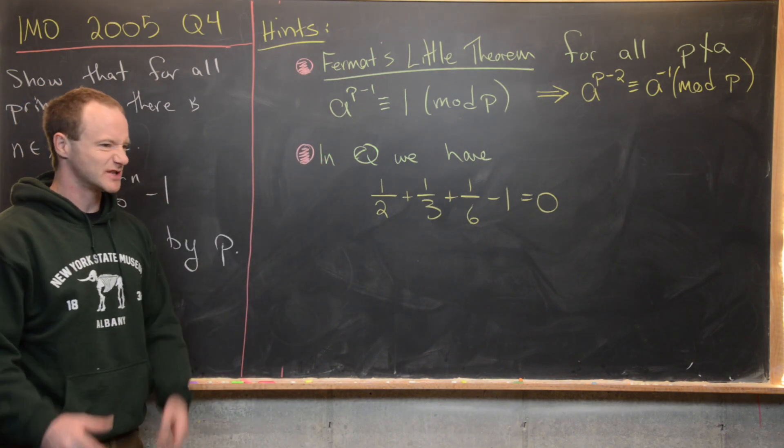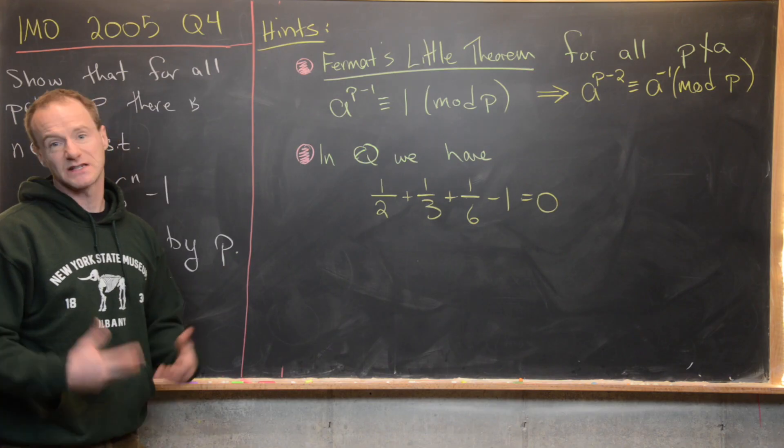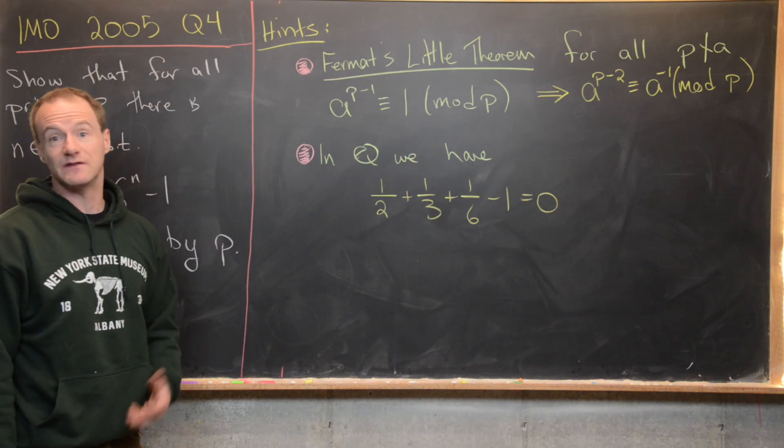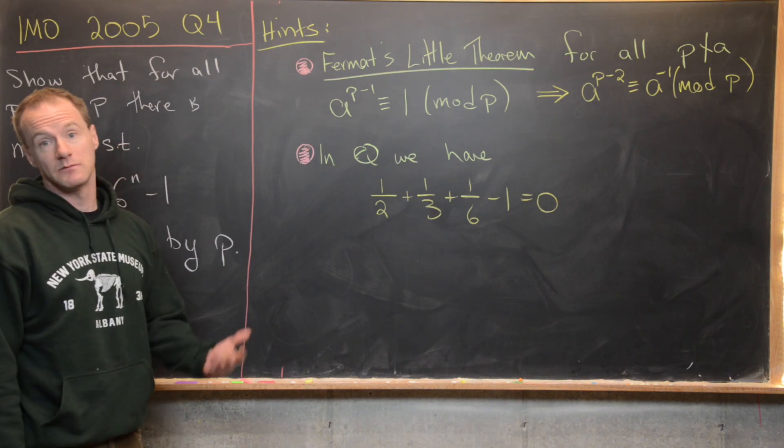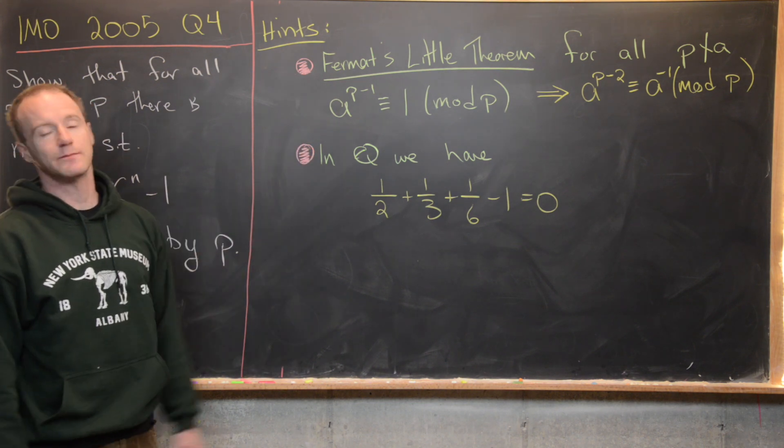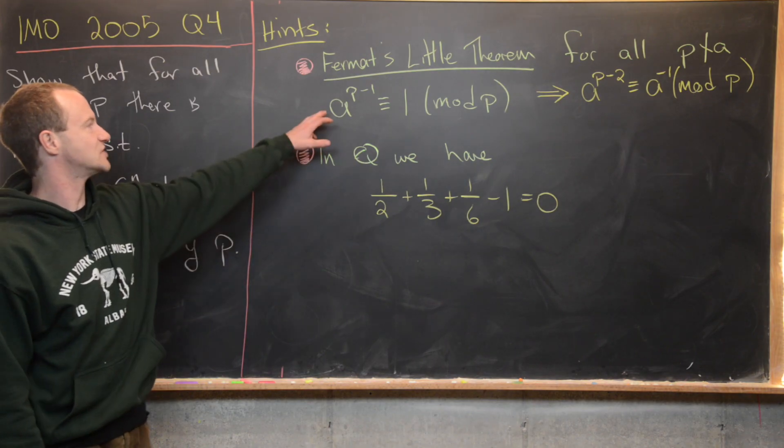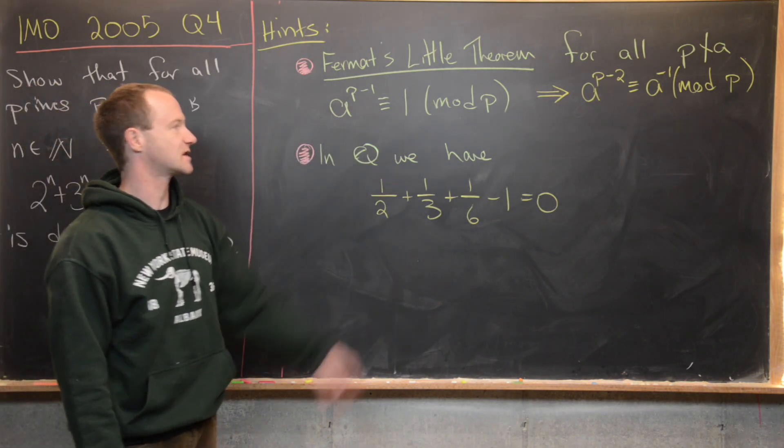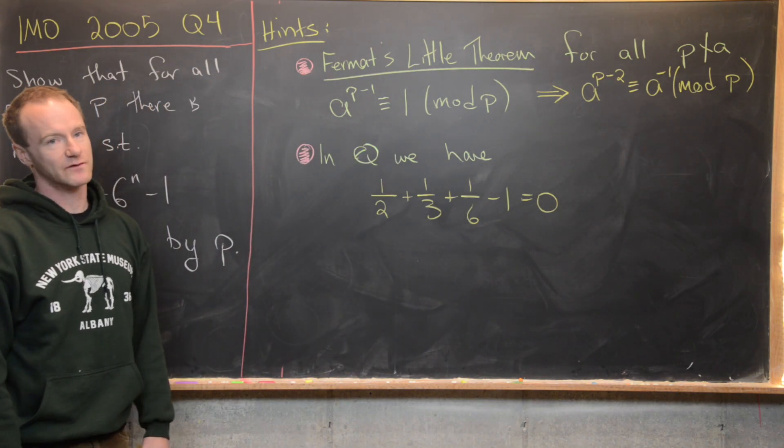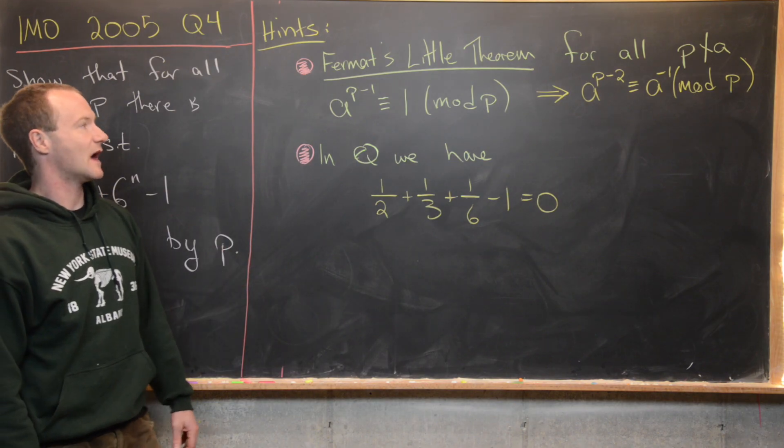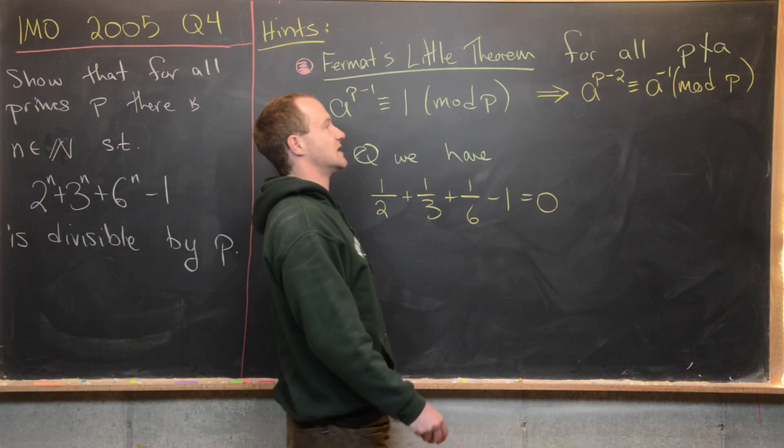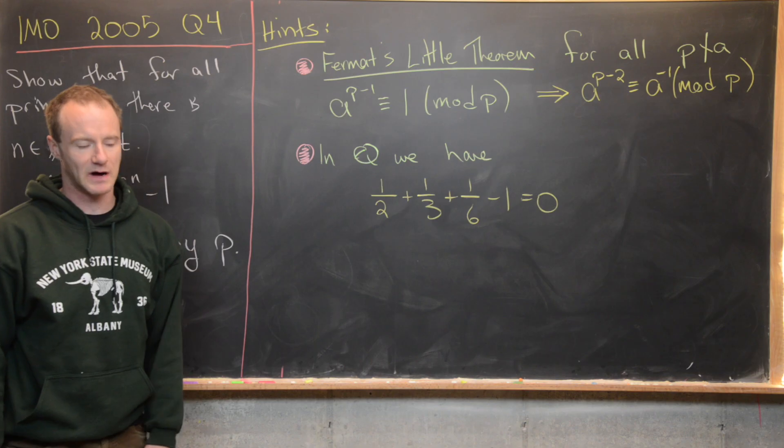This is essentially talking about the possible orders of elements in fields with p numbers of elements. So that quickly implies that a^(p-2) is congruent to a^(-1) mod p, and we can get that just by multiplying both sides of this congruence with a^(-1), keeping in mind that we know that everything which is not a multiple of p is invertible mod p.